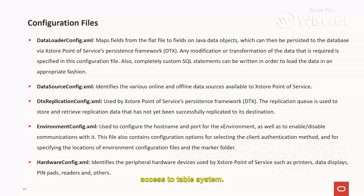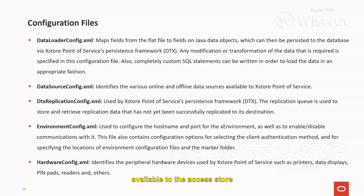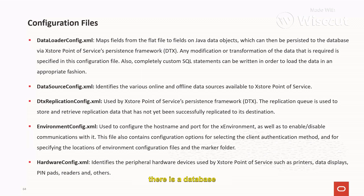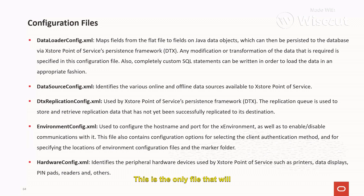The data_source_config.xml file identifies the various online and offline data sources available to the Access Store Point of Service. If you experience a database connection issue, this is the file to check — it contains all the database connection details from which Access Store retrieves its data source information.